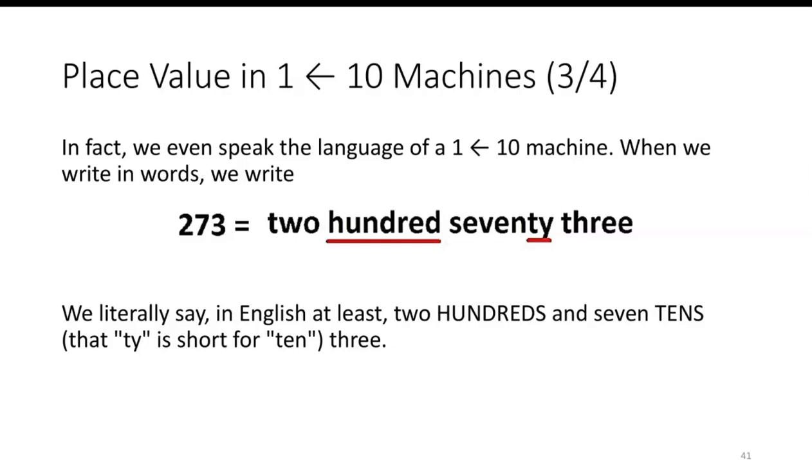In fact, we even speak the language of a 1←10 machine. When we write 273 in words, we literally say in English at least two hundreds and seven tens, where 'ty' is short for 'ten', three.